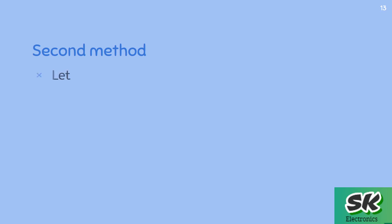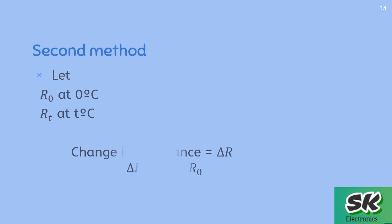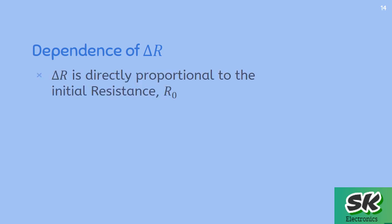There is also another method to find the value of alpha. Let R₀ be the resistance at zero degrees Celsius and Rt be the resistance at temperature t degrees Celsius. After heating, delta R is the change in resistance, which is final resistance minus initial resistance. Delta R is directly proportional to the initial resistance R₀ — meaning if initial resistance is high, the change will also be high, and vice versa.